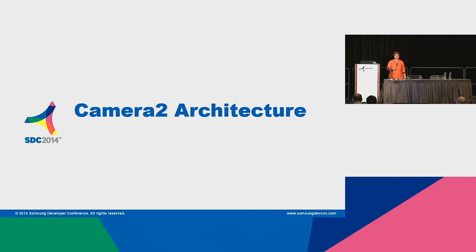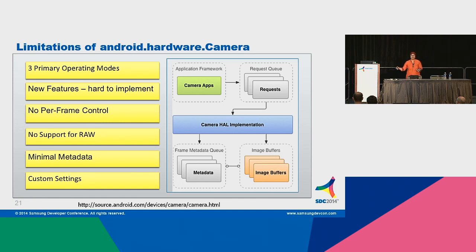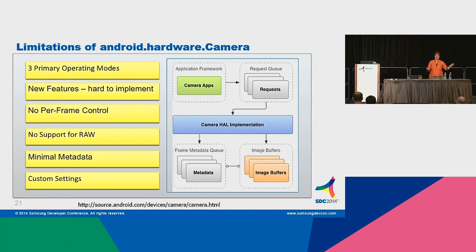Let's move into the Camera 2 architecture. The architecture diagram for the old camera API shows that whenever settings were set for a request, they were global settings — if you set them once, whatever requests were in the pipeline all got impacted. The second thing was it wasn't deterministic: you didn't know when the settings would go into effect — is there a one-frame delay or a four-frame delay? And when you got frames back, you didn't know what settings were used.